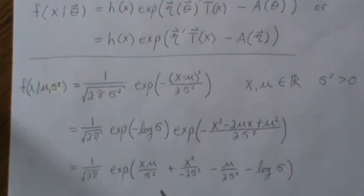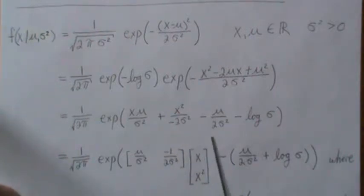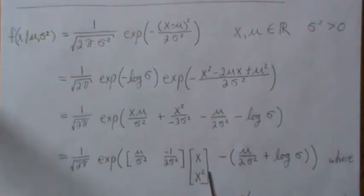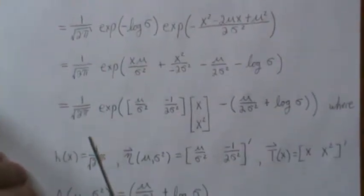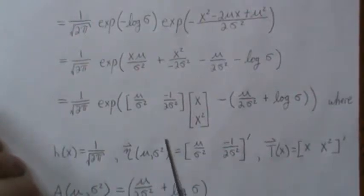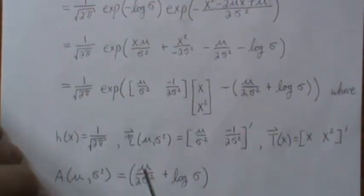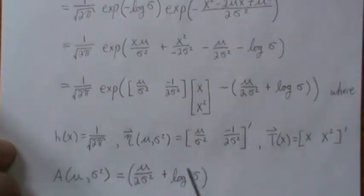This is expanded to three terms, and this piece here can be written as the product of two vectors. So what we've done: this is the h function, this is your eta vector, these right here are your sufficient statistics, and this is your log partition of the exponential family. Now this is the exponential in sort of the original parameterization — let's put it in canonical form.